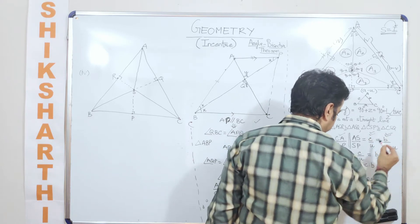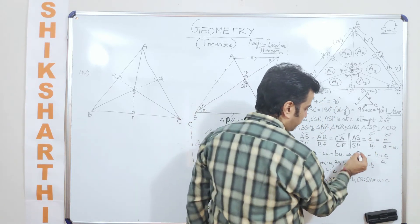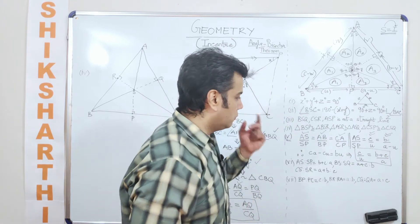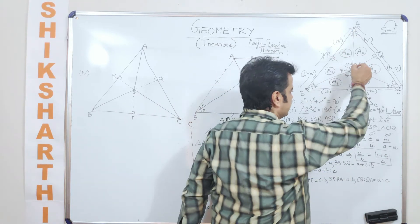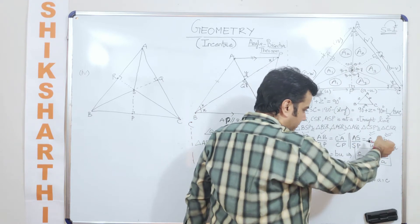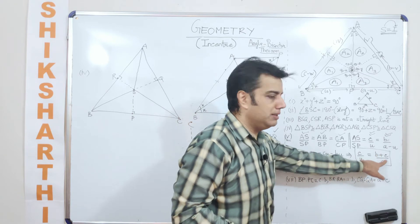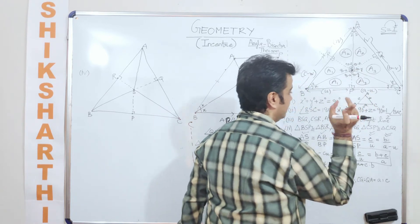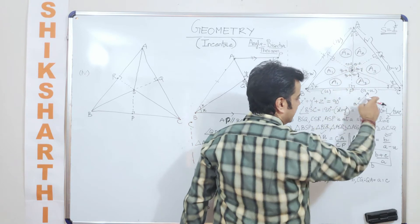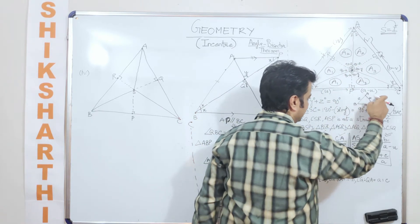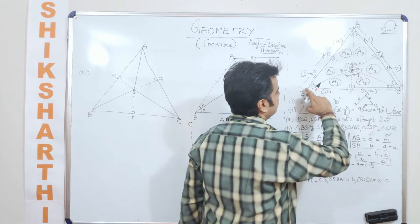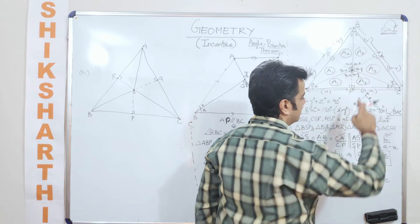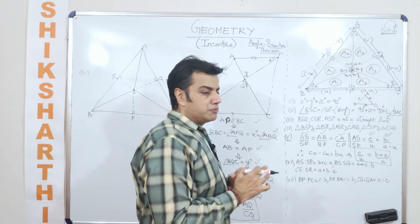Using these two expressions and solving, we get the ratio c divided by U — which is AS to SP — comes out to be (b plus c) to a. So AS to SP equals the sum of the two sides b plus c, divided by the opposite side a. Similarly, BS to SQ and so on follow the same pattern.